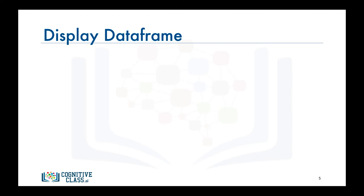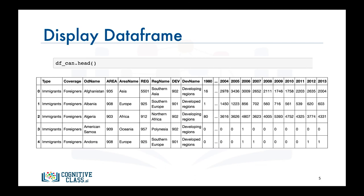If you want to confirm that you have imported your data correctly in pandas, you can always use the head function to display the first five rows of the data frame. So if we call this function on our data frame df_can, here is the output. As you can see, the output of the head function looks correct, with the columns having the correct labels and each row representing a country and containing the total number of immigrants from that country.